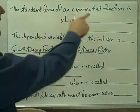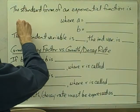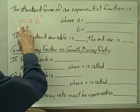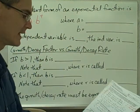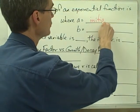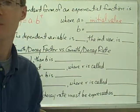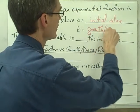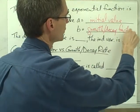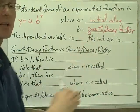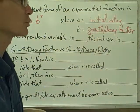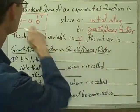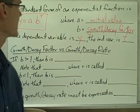The standard form of an exponential function, like we just derived, looks like this: y equals a times b to the power of t — sometimes written as a times b to the power of x. Here, a is the initial value; in our previous example that was $40,000, our starting salary. And b is called the growth or decay factor. In our previous example, b was 1.06 — a growth factor since our salary was growing.